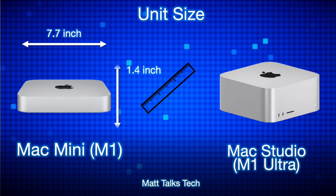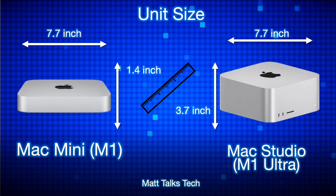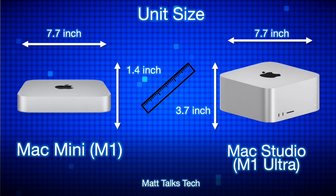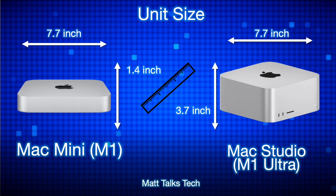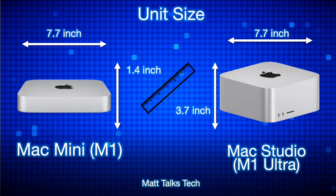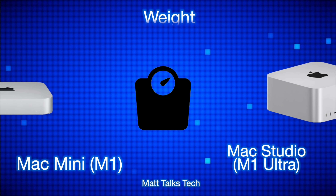Starting with unit size: the Mac Mini is 1.4 inches tall and about 7.7 inches wide. The Mac Studio is bigger — its width is exactly the same as the Mac Mini, but the height is much greater at about 3.7 inches, roughly two and a half times the height of the Mac Mini. Apart from the height, the form factor is very similar.